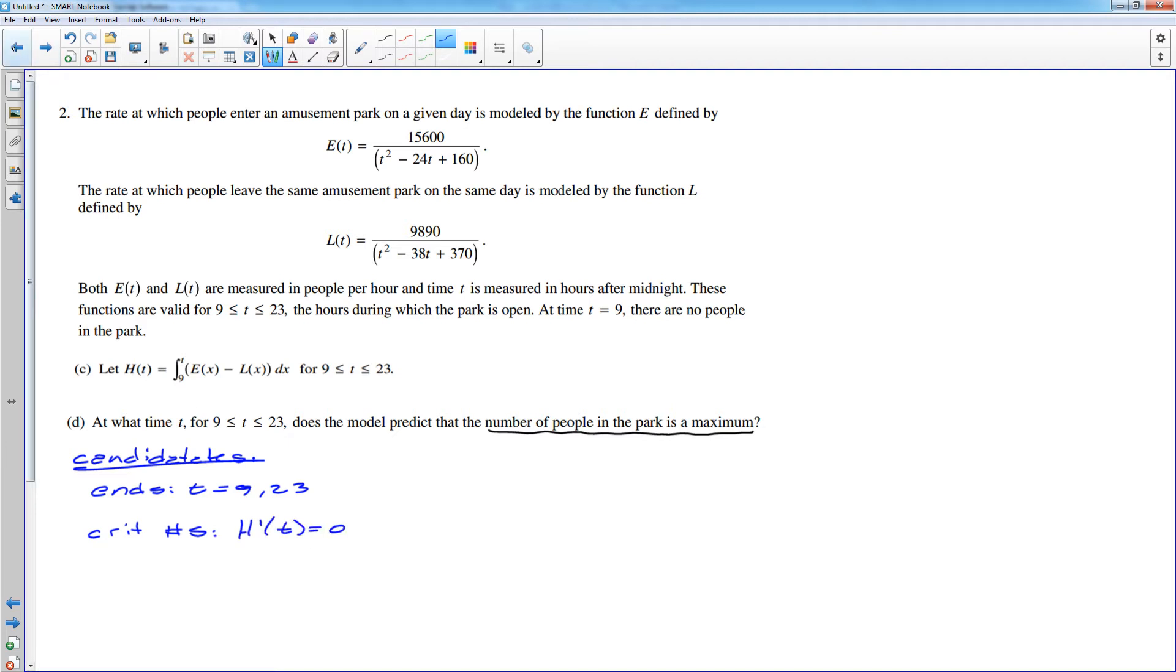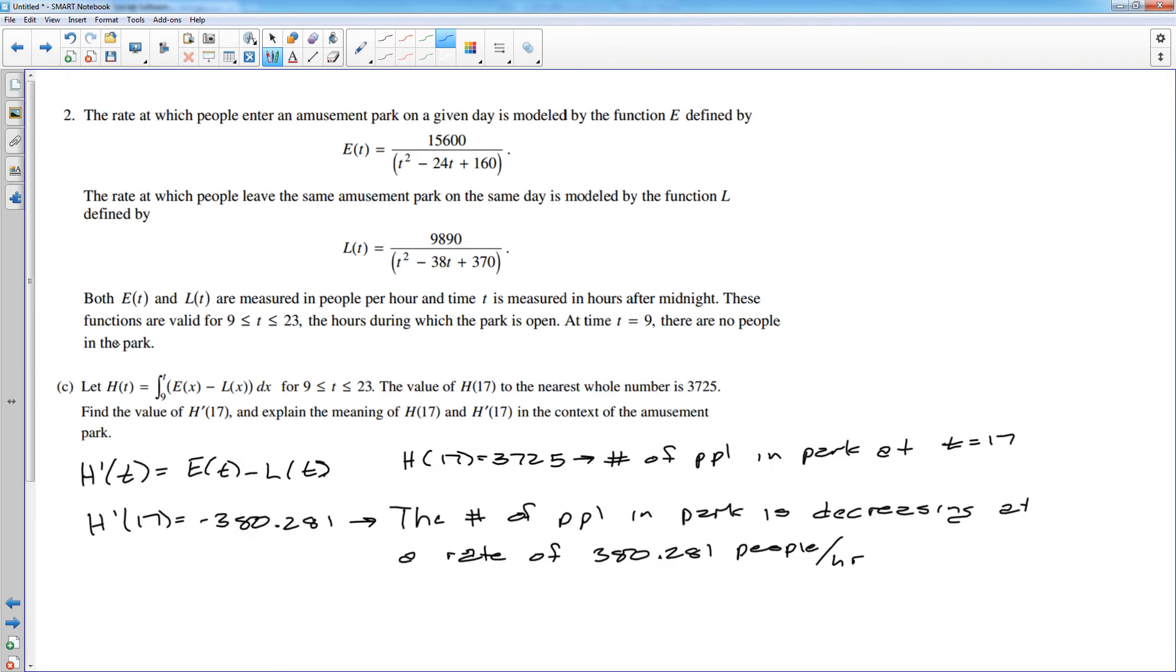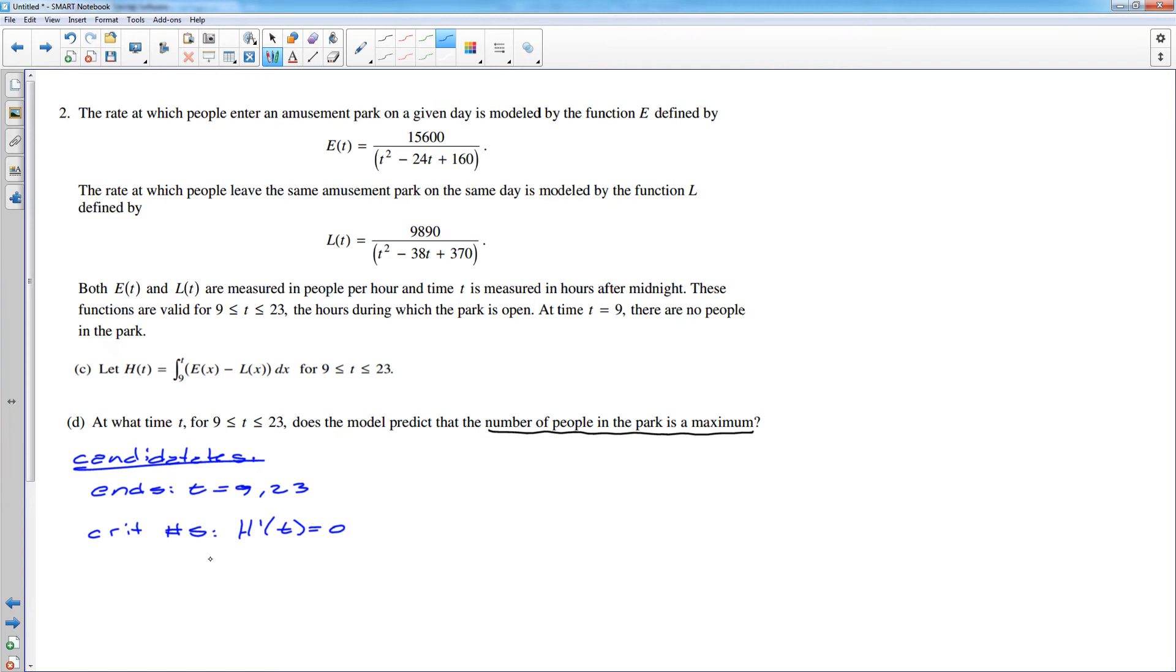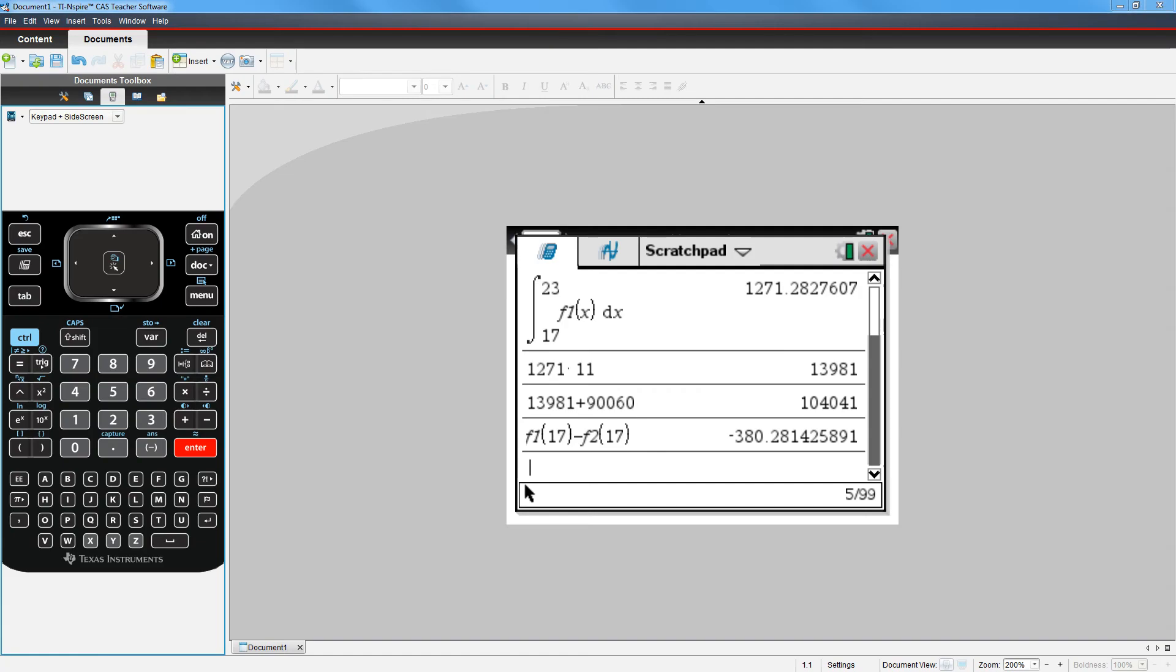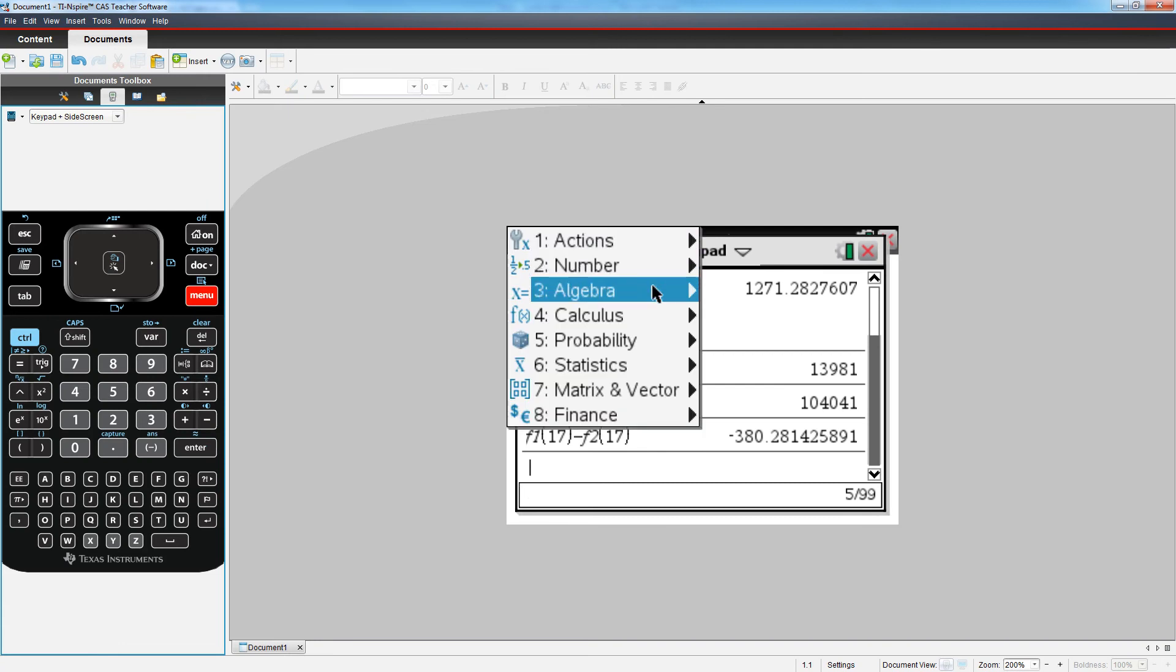And we have already said in part C that h prime is e minus l. So we need e of t minus l of t to equal 0. That's going to be whenever e of t is equal to l of t. And we have to solve that equation. This is a calculator question, so I will solve that in the calculator. I usually don't use the solve feature in the calculator. I usually solve on a graph screen. But I have a CAS calculator, so I'm actually going to be able to go into my calculator. And I'm simply going to tell it to go algebra, solve the equation.